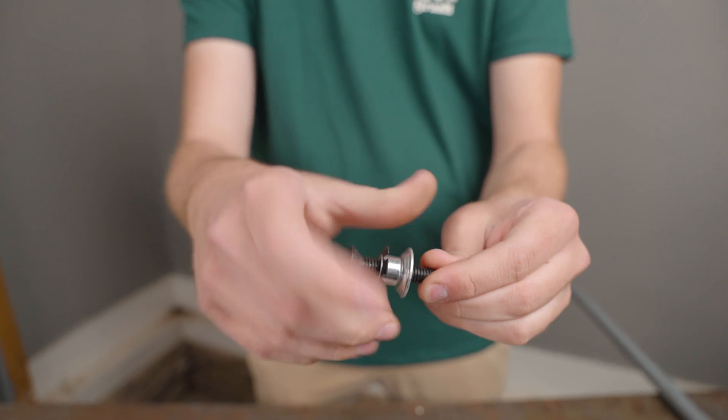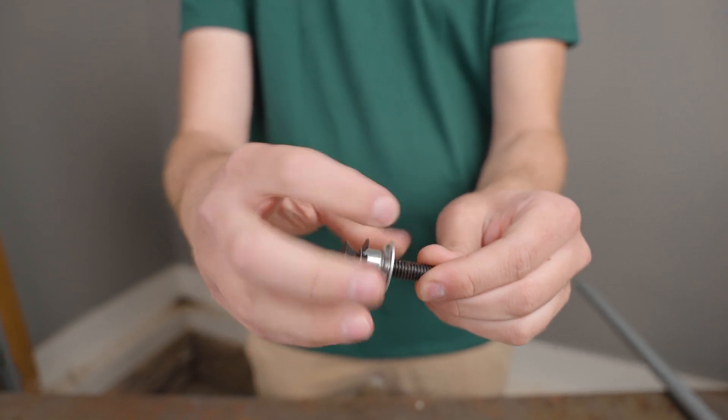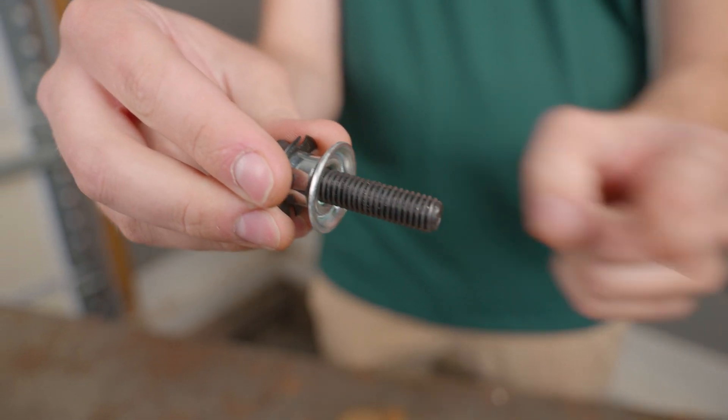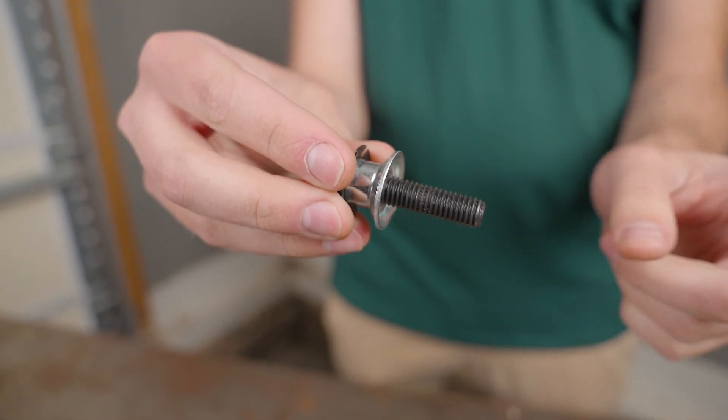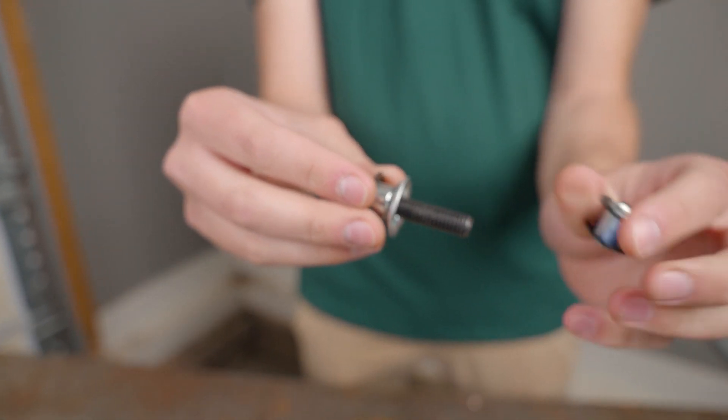So you're just going to thread this all the way until it is touching the head of the bolt and the lip. You want that to be facing the threads going straight down. And then you're going to take the insert that you want to put in.